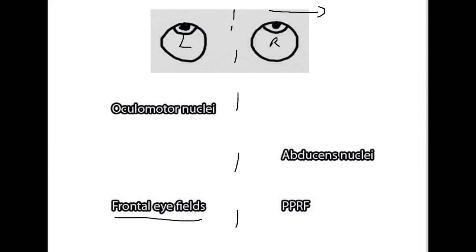A signal starts out in the left frontal eye field in the brain. And that signal is going to travel across to the opposite side, to the paramedian pontine reticular formation on the right side.